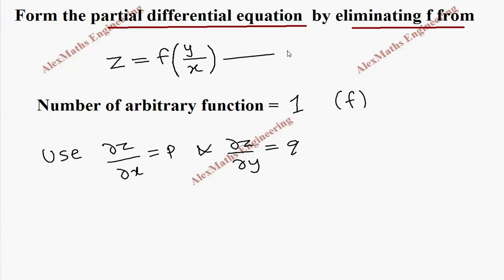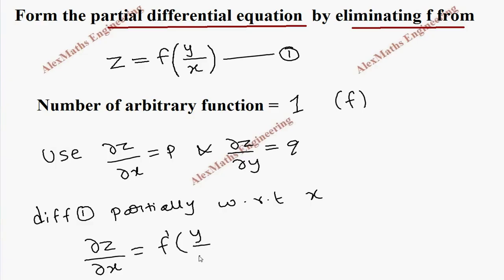We are going to name this as equation 1. Now differentiating this partially with respect to x: ∂z/∂x equals f'(y/x). Here y is a constant when we do partial derivative with respect to x, so the constant y is written as it is. By chain rule, the remaining is 1/x, and the derivative of 1/x is -1/x².